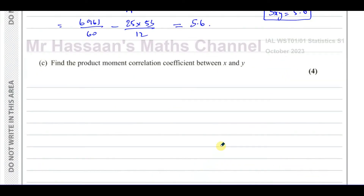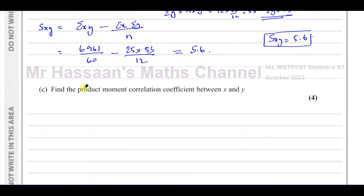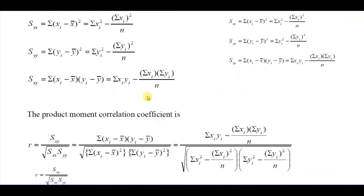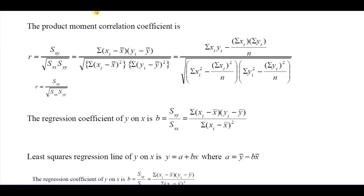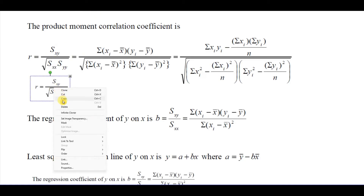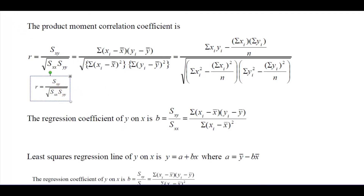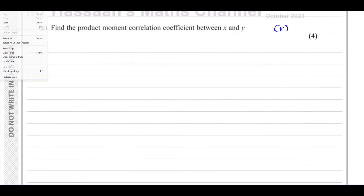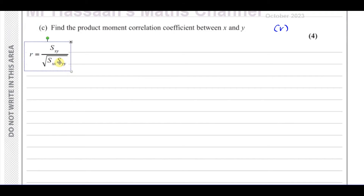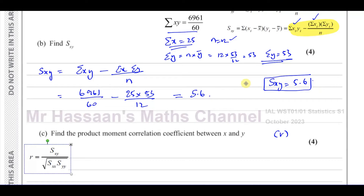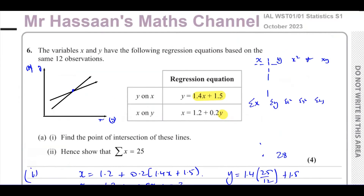Now part C: find the product moment correlation coefficient between X and Y. We've got to find what's called the PMCC, sometimes given the symbol R. From the formula sheet, R equals SXY over the square root of SXX times SYY. We now have SXY, but do we have SXX and SYY? No, we don't. How do we find those? Let's go back to the formula sheet and brainstorm.